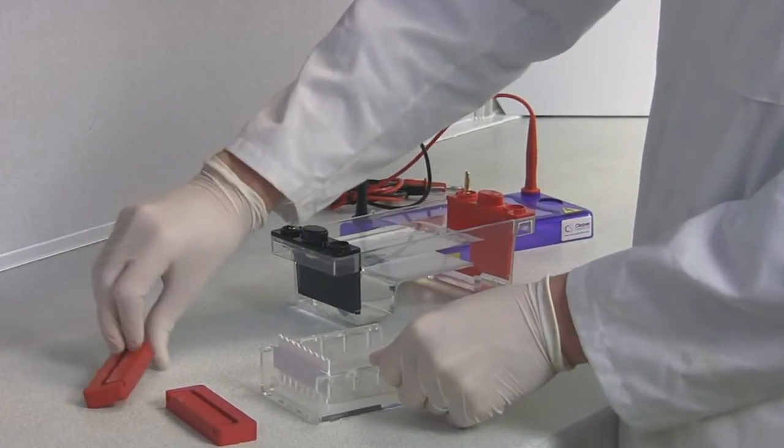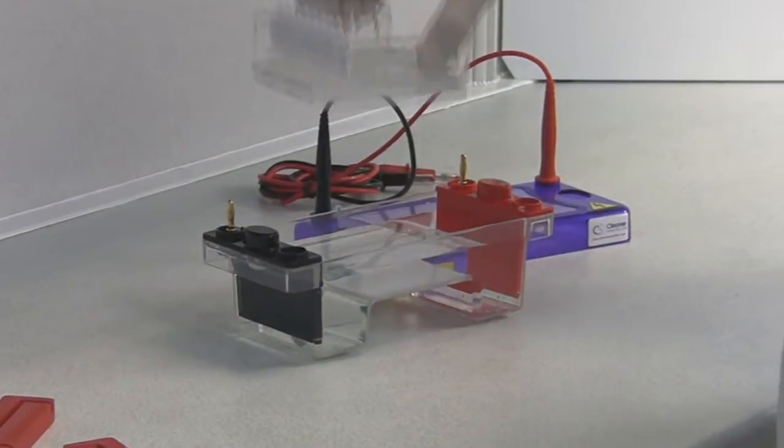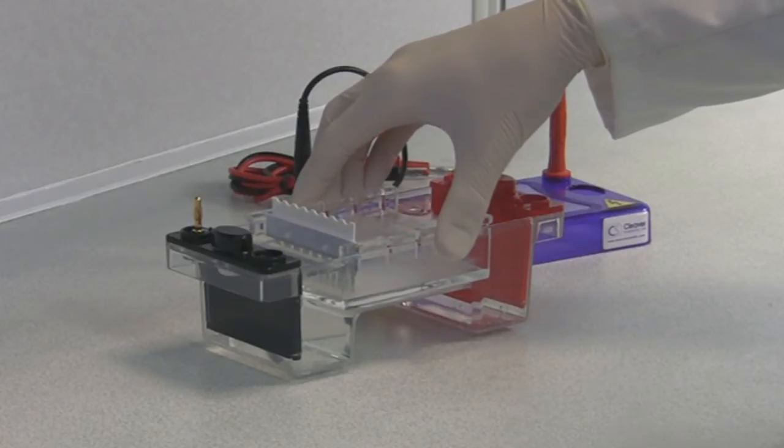UV transparent gel trays also serve as a convenient support for safe transportation of gels from the bench to the tank.